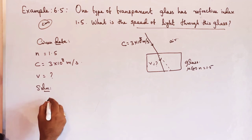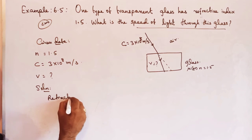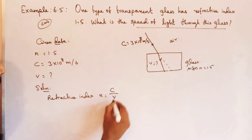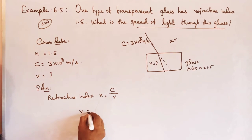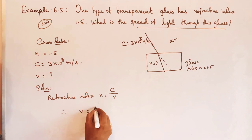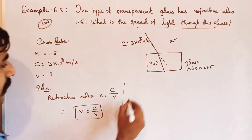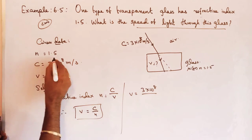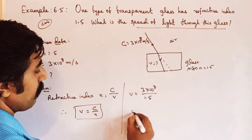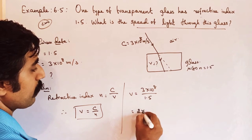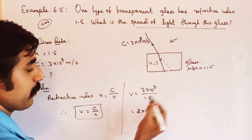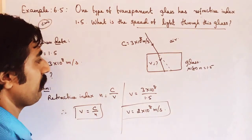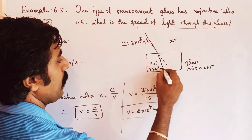Solution — what formula? Refractive index is equal to speed of light in air or vacuum divided by speed of light in medium. So from this, v is equal to c divided by n — that is 3 divided by 1.5 — which equals 2 into 10⁸ meter per second. So this is the speed of light through this medium. The value of v is 2 into 10⁸ meter per second.